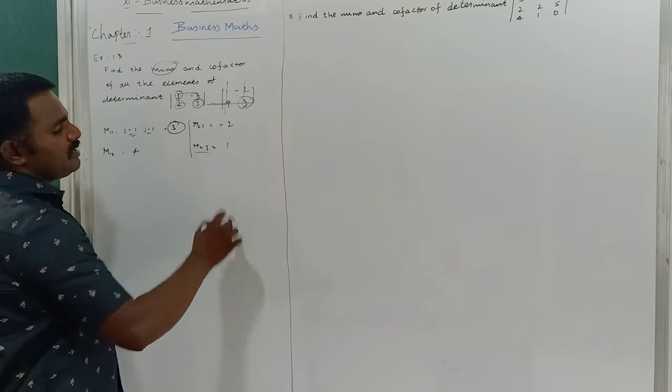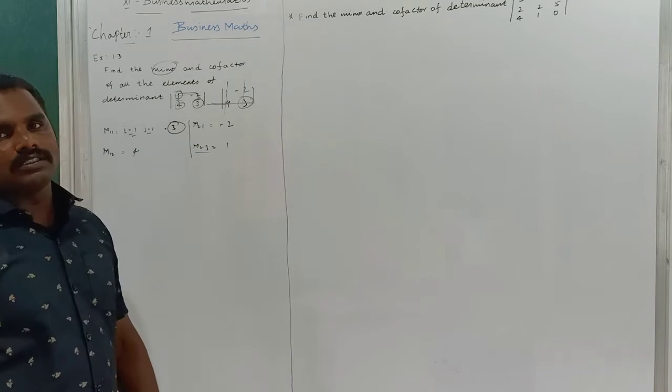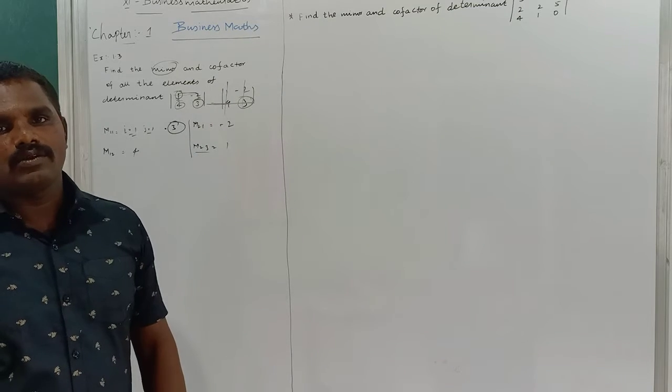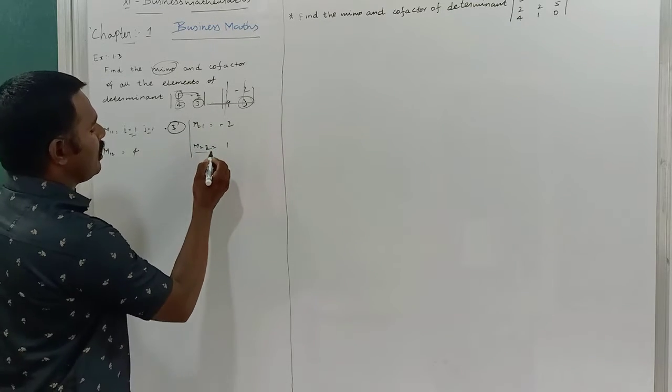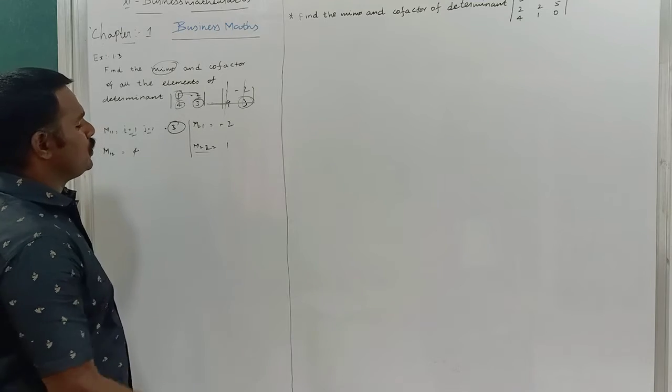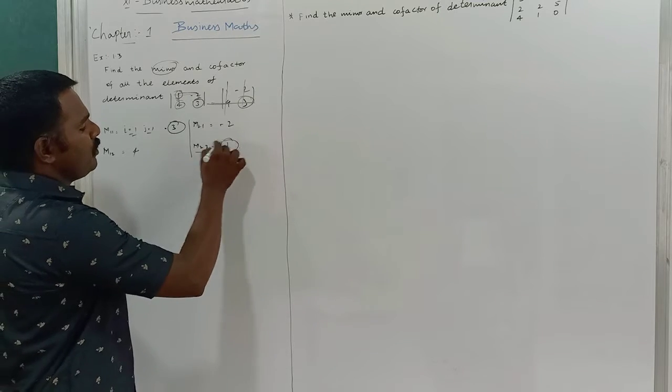Minor of M22: second row and second column. I remove those two terms and the remaining element is 1. So 1 is the minor of M22.